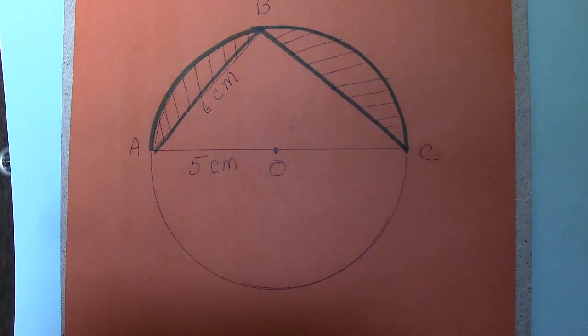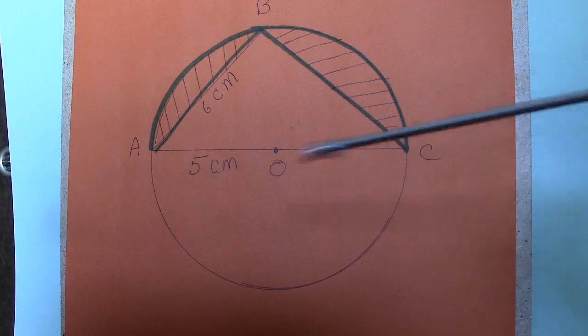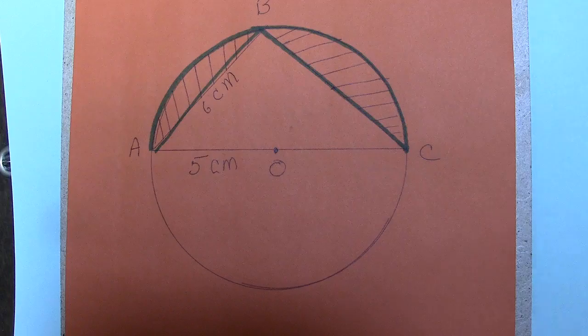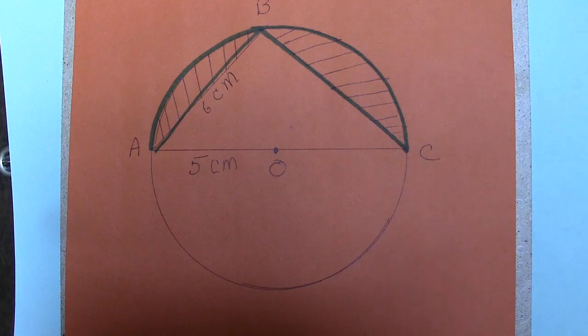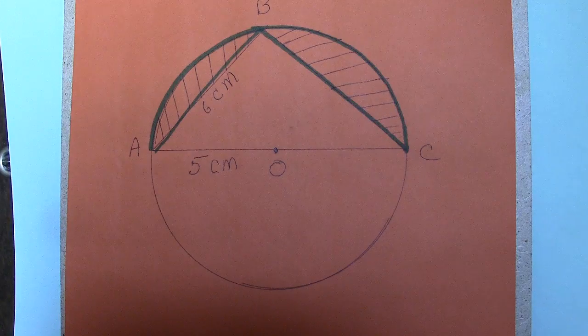Now the side, one side AB is 6 cm. The side AC is 10. We know this is a right angle triangle. Therefore the Pythagorean theorem holds.